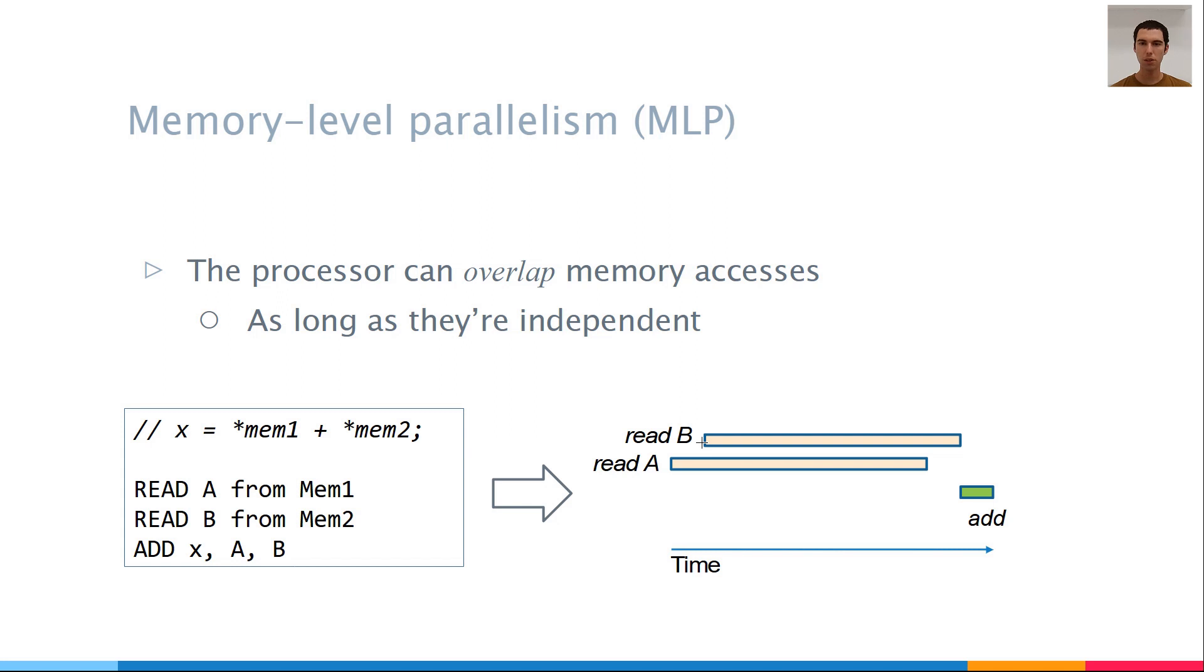The next instruction is the addition, which needs the results of the first two instructions. Now, the CPU waits until both reads finish, and then performs the addition. Here, MLP saved us a lot of time, because the reads were not dependent.